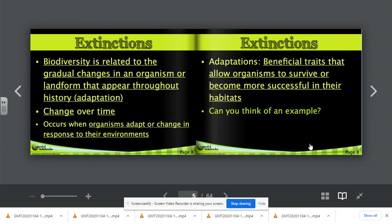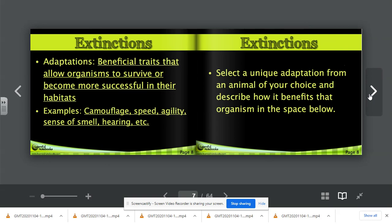Adaptations occur when organisms adapt or change in response to their environments. Adaptations are beneficial traits that allow organisms to survive or become more successful in their habitats. Can you think of an example of an adaptation? Think about the long neck of the giraffe, the beak of the toucan, superior vision in some animals. Those are all adaptations. Camouflage, speed, agility, sense of smell, hearing, and so on are all examples of adaptations.